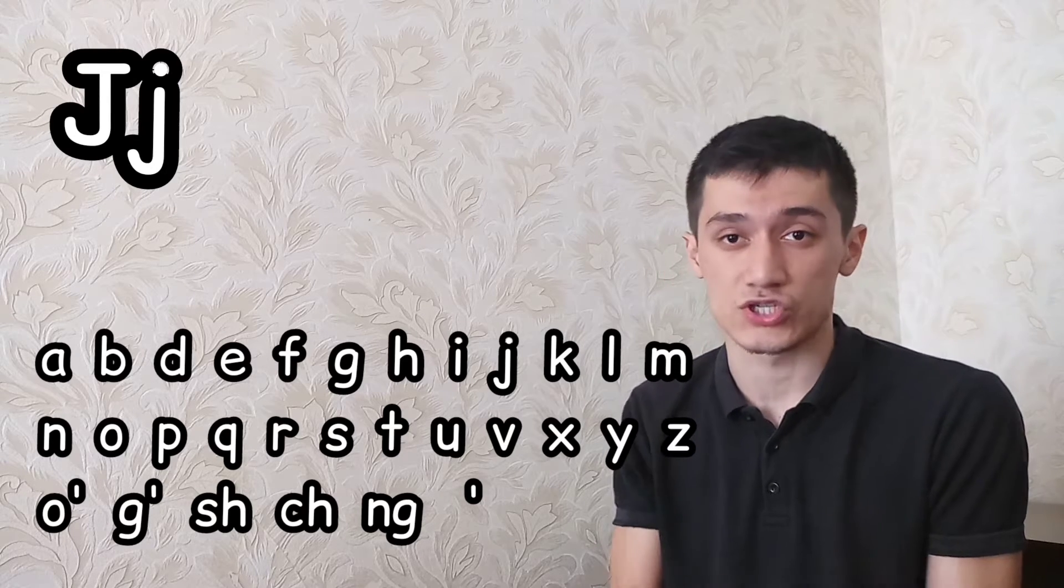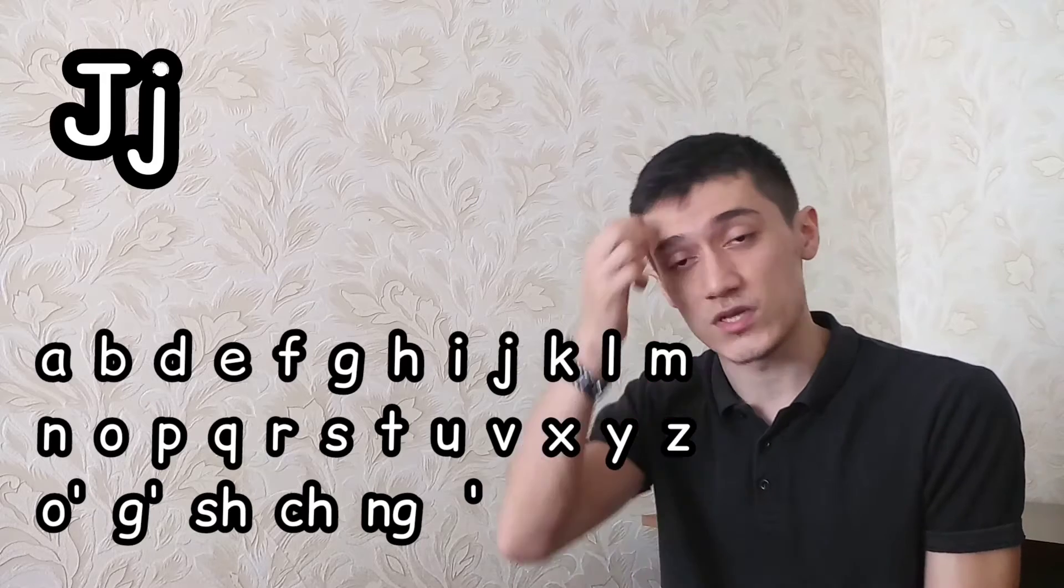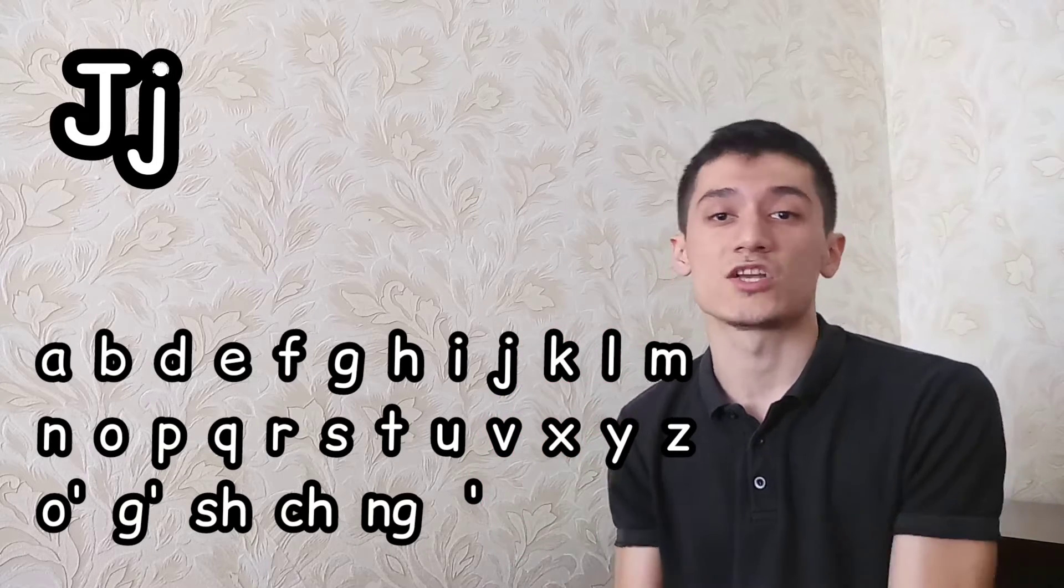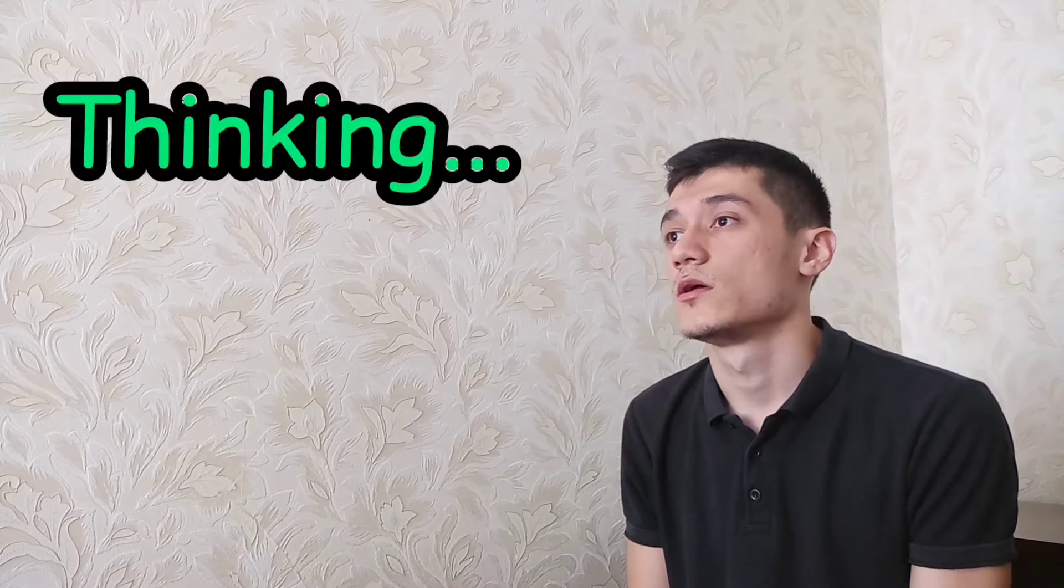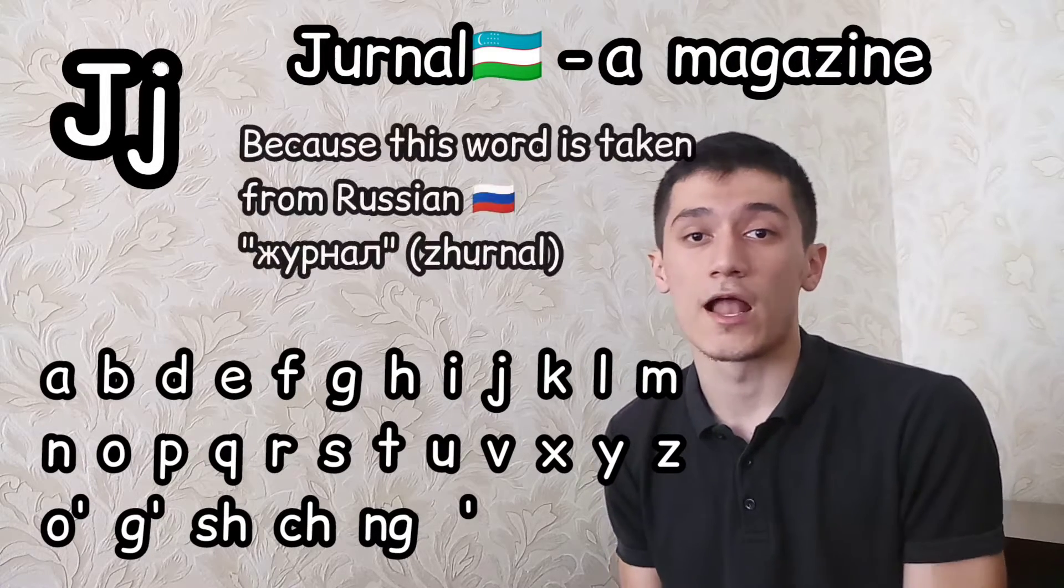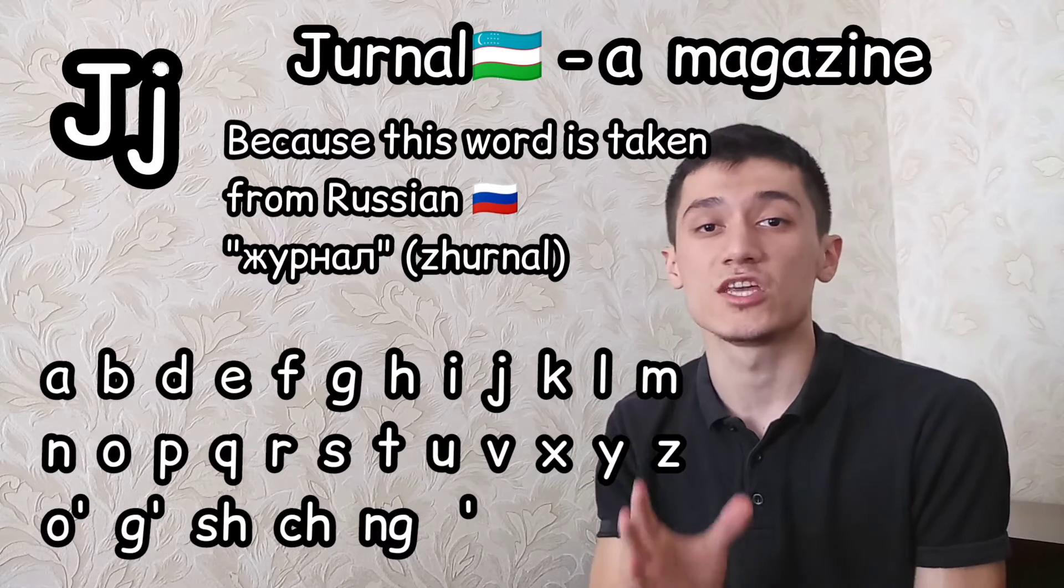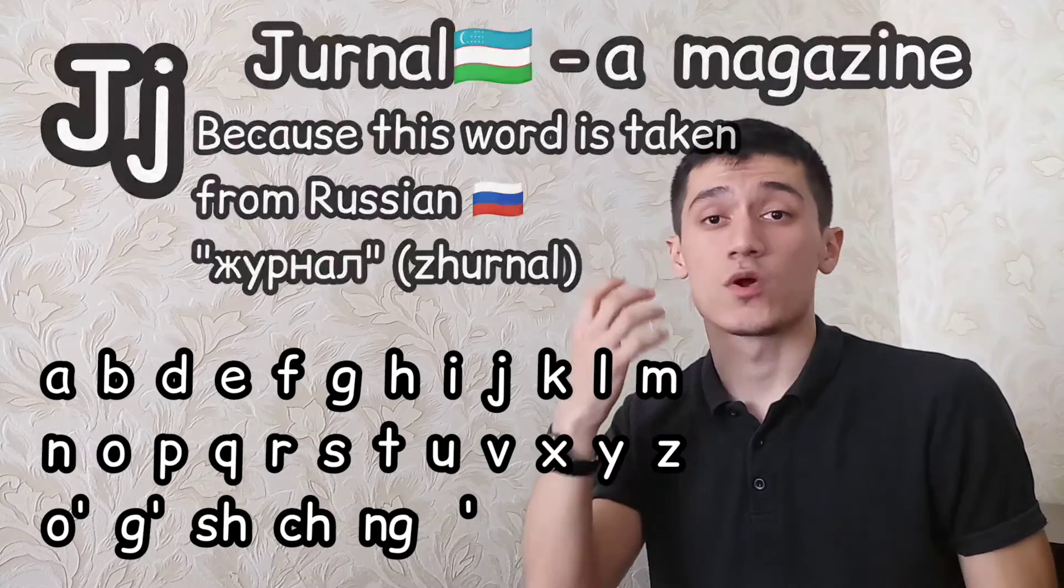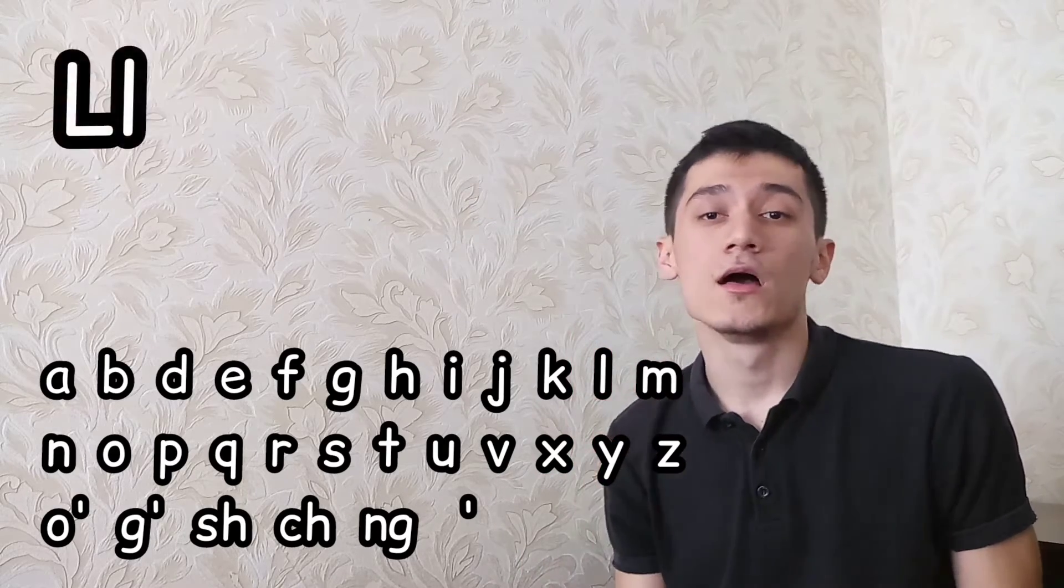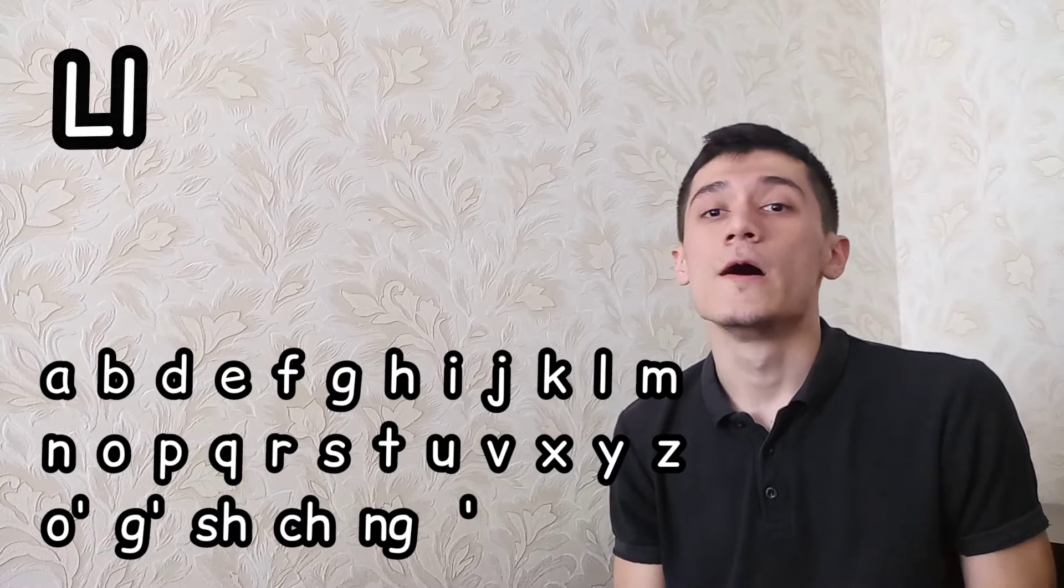The next one is 'J', sometimes 'zh', but most of the time we say 'J'. Sometimes we say 'zh' for words taken from Russian, for example 'journal' - we don't say 'journal', we say 'zhurnal'. The next one is 'K'. 'L'. 'M'.